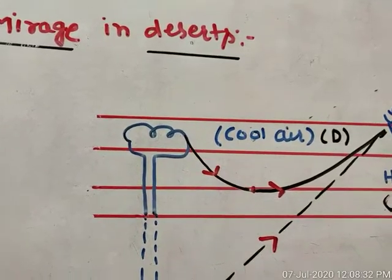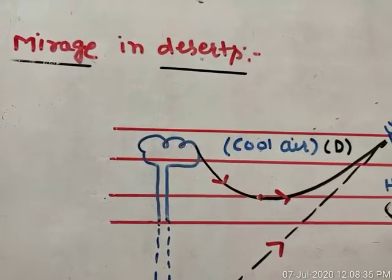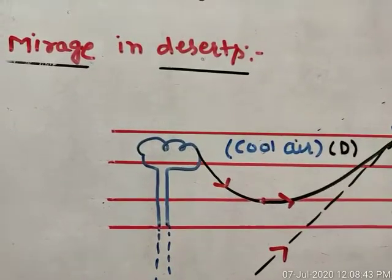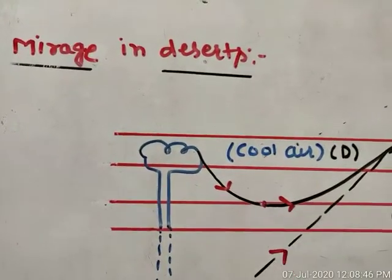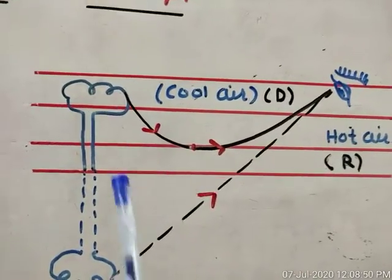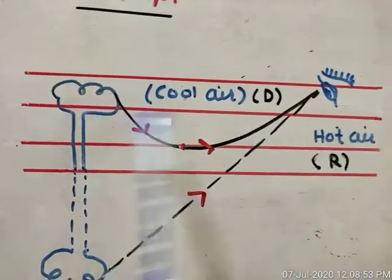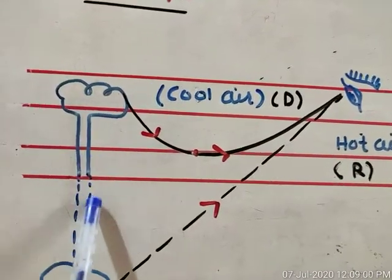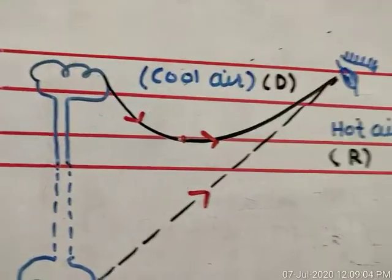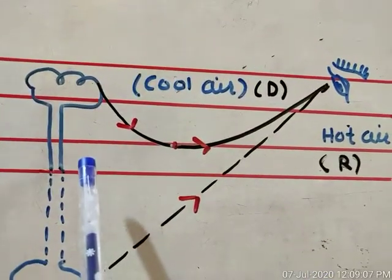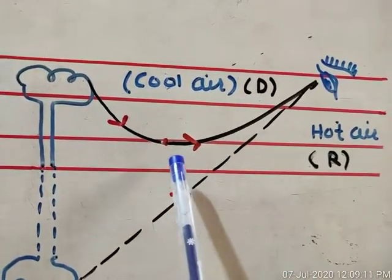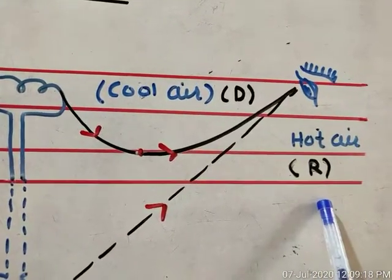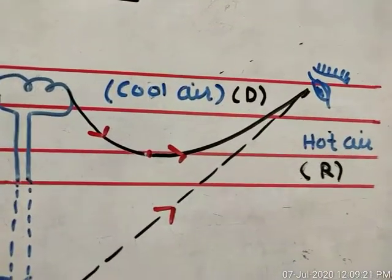This optical illusion is called mirage in desert. Now why does it happen? Notice these parallel lines representing our earth's surface, and on the earth's surface there is a tree standing perfectly upright. The lower region of the earth's surface has sand, so it is hot. Hot air behaves like a rarer medium. As we go higher above the earth's surface, the air becomes cooler.